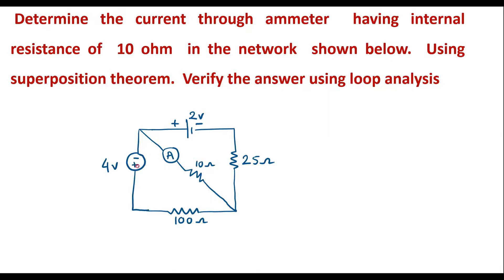First I will consider the 2 volt voltage source and find the current through this 10 ohm resistor. Then I will consider the 4 volt source alone and find the current through the 10 ohm resistor. The sum of those two currents is the total current flowing through the 10 ohm resistor. So I will assume that the current through the 10 ohm resistor is I, and I will calculate I using superposition theorem.